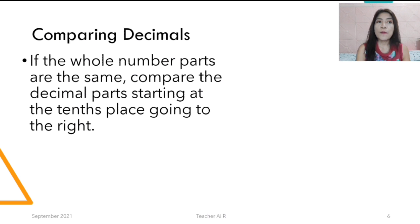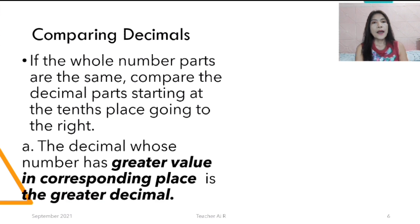So when we compare the decimals, if the whole number parts are the same, compare the decimals starting from the 10th place values going to the right. 10th, if you have to start from 10th first, then after that would be the 100th, the 1,000th, the 10,000th, so on and so forth. The decimal whose number has greater value in the corresponding place is the greater decimal.